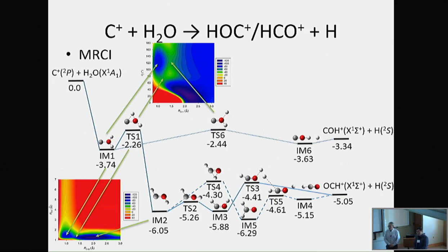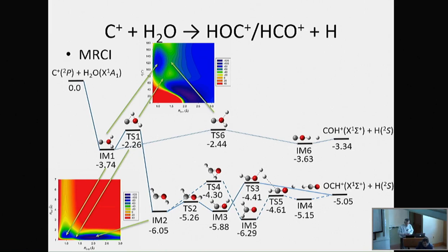Do you calculate your potential energy surfaces at specifically defined points? No. What we do is first map out all the stationary points, then establish the minimum energy path, and then run trajectories. These trajectories pick up points which are not already included, and then we add them and gradually iterate the process. Let's thank the speaker again.